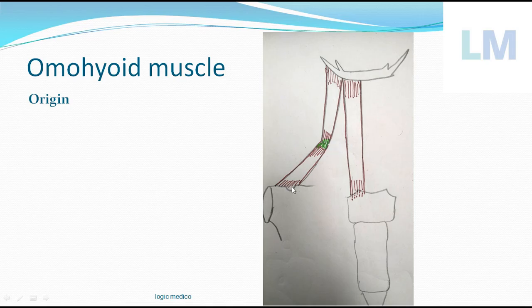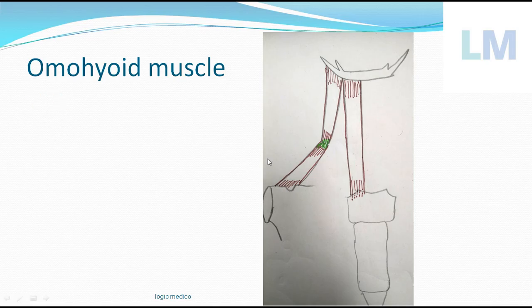To summarize: origin is the suprascapular notch of the scapula and the suprascapular ligament. Insertion is the lower border of the body and the greater cornu of the hyoid bone.